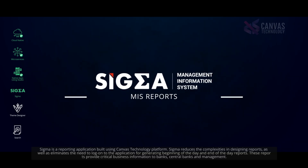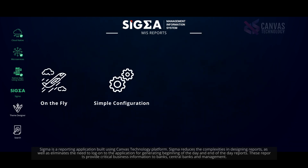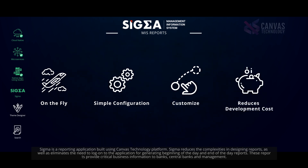Sigma is a reporting application built using the Canvas technology platform. Sigma reduces the complexities in designing reports and eliminates the need to log on to the application for generating beginning-of-day and end-of-day reports. These reports provide critical business information to banks, central banks, and management.